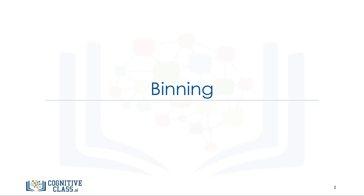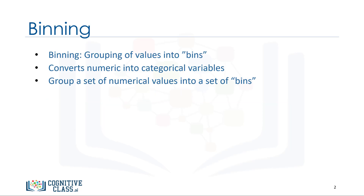In this video, we'll be talking about binning as a method of data pre-processing. Binning is when you group values together into bins. For example, you can bin age into 0 to 5, 6 to 10, 11 to 15, and so on. Sometimes binning can improve accuracy of the predictive models.